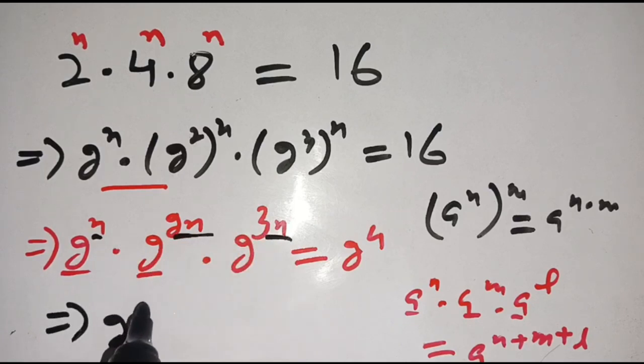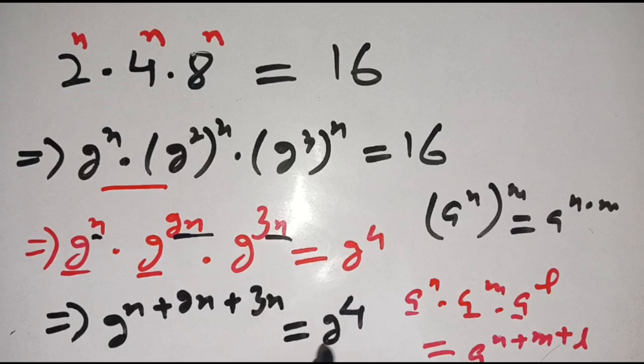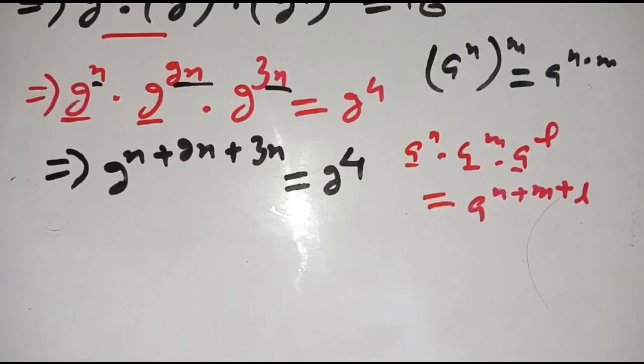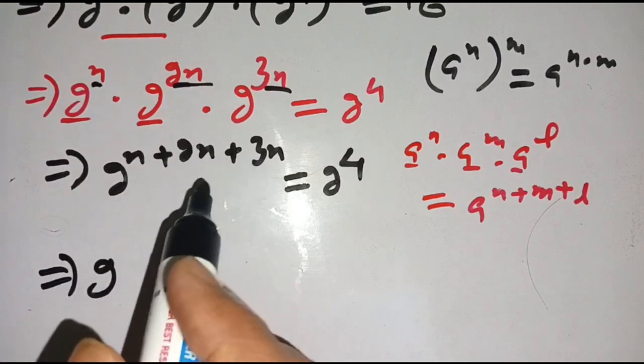Now on the next step we can write 2 power n plus 2n plus 3n. It becomes 6n, so 2 power 6n is equal to 2 power 4.